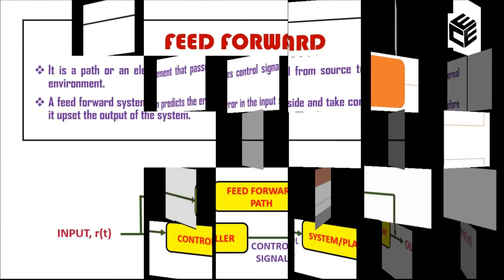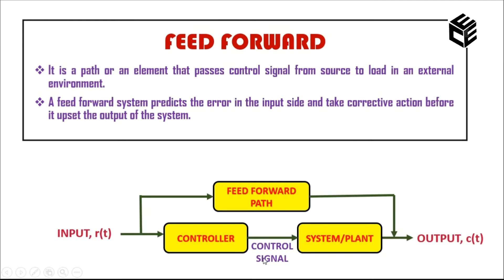First, let's see what is a feedforward system. On seeing this diagram you can understand that a feedforward path is a path that connects input and output in the forward direction. We use this feedforward path because if you predict that some error is going to disturb the system's output, you can make corrections at the input side through this feedforward path in order to overcome the disturbance.